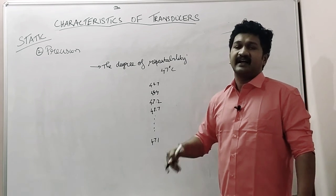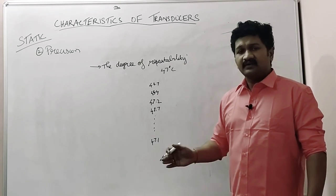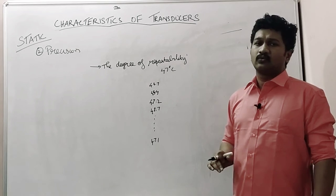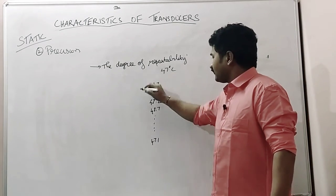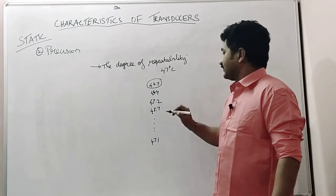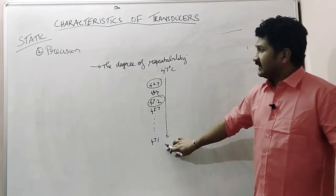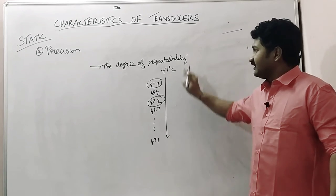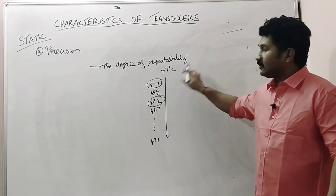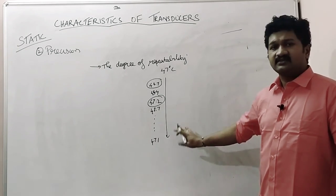This is the difference between accuracy and precision. Accuracy is the degree of closeness to the true value. We can call one of the 10 readings accurate. But combinedly, all the 10 readings, if it is repeated, the degree of repeatability is maintained near to 47 degrees Celsius—it is called precision.